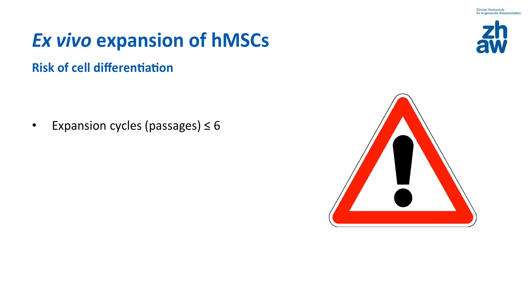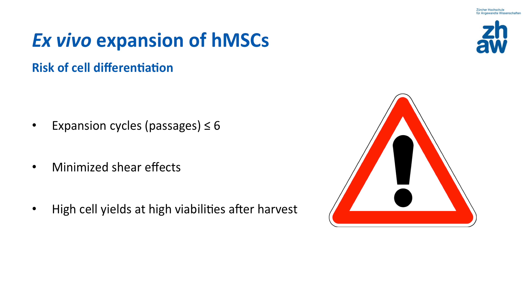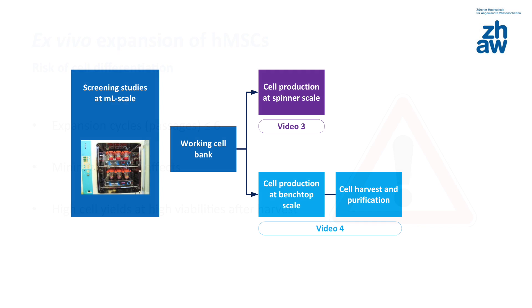When doing this, more than six passages and high shear stress have to be avoided due to the high risk of cell differentiation. There is also a risk of cell differentiation during the cell harvest, which is generally preceded by chemical treatment. Maximum cell yields are sought with viabilities of around 95% after cell harvest. Screening studies to set preconditions for successful cell expansions are very important, but are not detailed in this description of our cultivation approach.